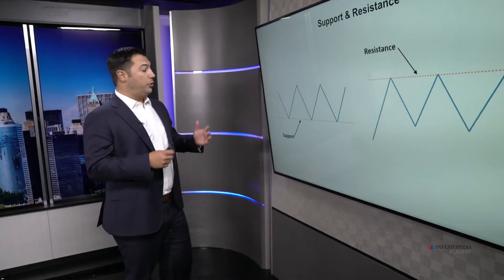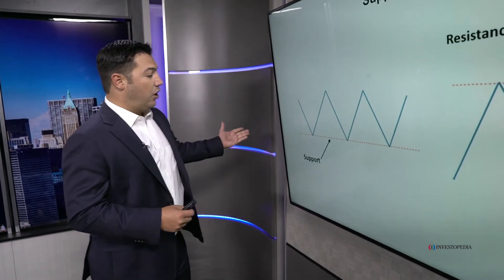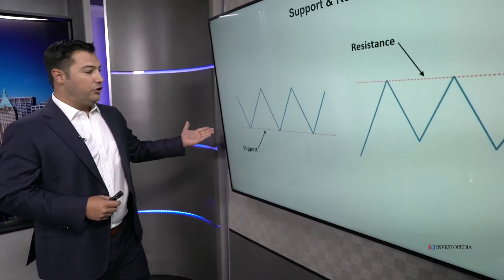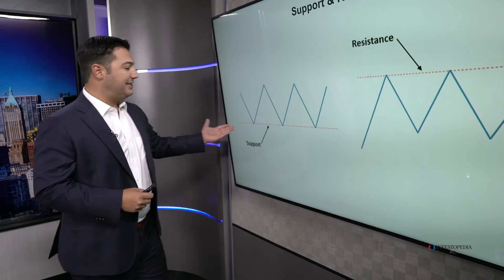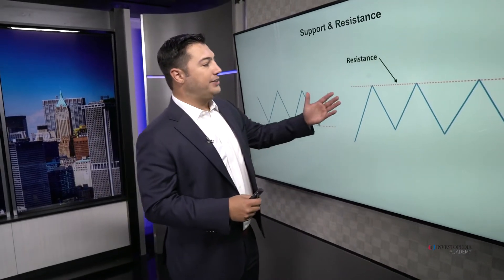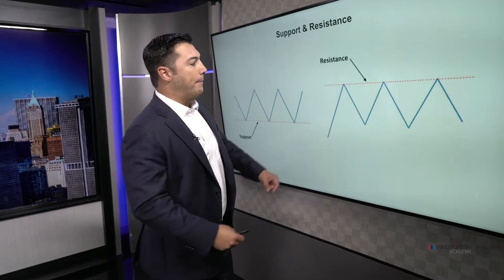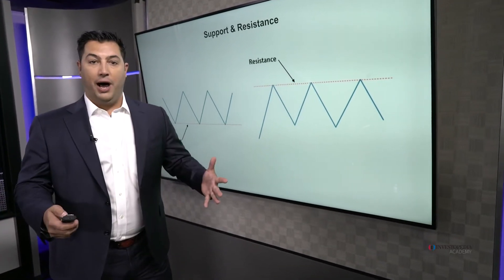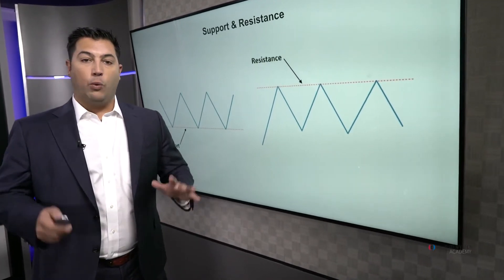This is supply and demand 101 — support and resistance. This is where technical analysis begins. To reiterate: support levels are below the market, where buying overwhelms the selling. Resistance is the exact opposite — this is overhead supply above the market, where the amount of selling overwhelms the buying.